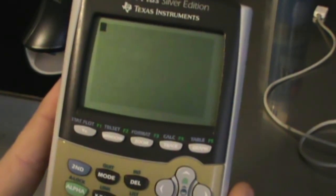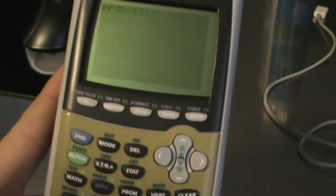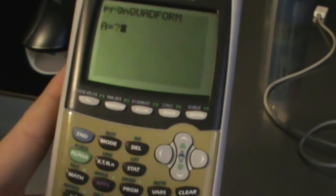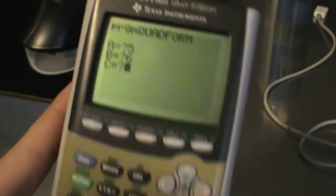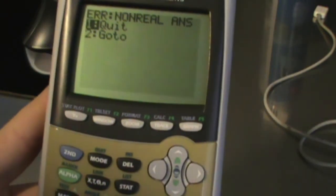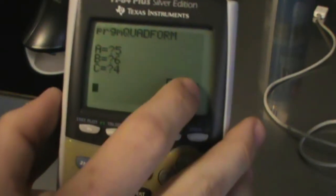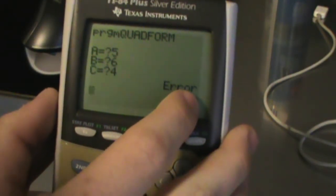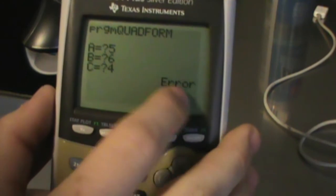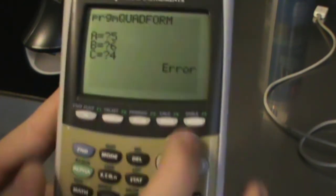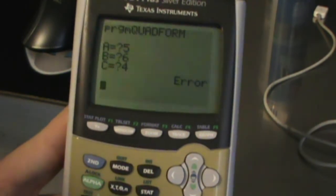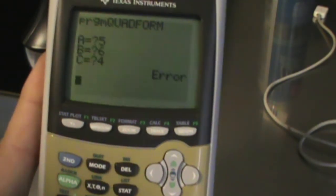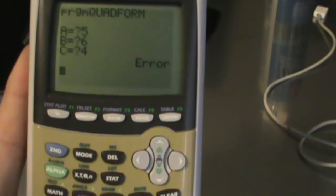So when you go to do this, you're going to hit execute. It'll ask for your A, your B, and your C. Of course, I'm not going to get a real answer here. But when you do get a real answer, you get two X values—X equals blank and X equals blank. And the blank would be the answer, of course. But that is how to create a quadratic formula program on a TI-84 Plus.